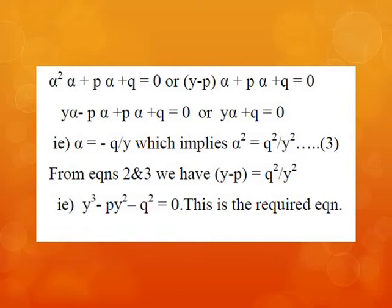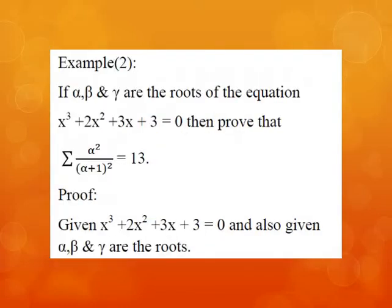Since the left-hand sides of equations 2 and 3 are equal, we equate the right-hand sides: y − p = q²/y², which implies y³ − py² − q² = 0. This is the required equation.